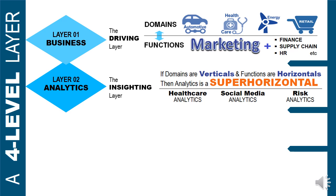The layer immediately below that is the analytics layer — the inciting layer. If domains are verticals and functions are horizontals, then I would call analytics a super horizontal. At the time of making this video, I checked the web and there is yet to be a word called super horizontal, so let me take the credit for that. Analytics stretches over both domains and functions. Healthcare analytics is domain-based; social media analytics is attached to marketing; risk analytics is attached to finance.